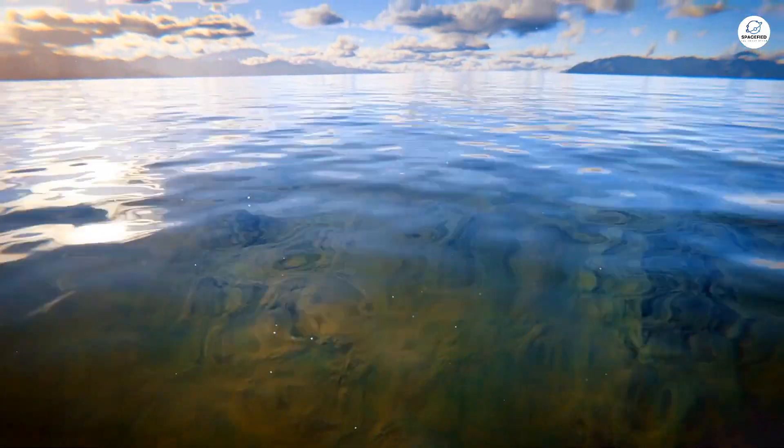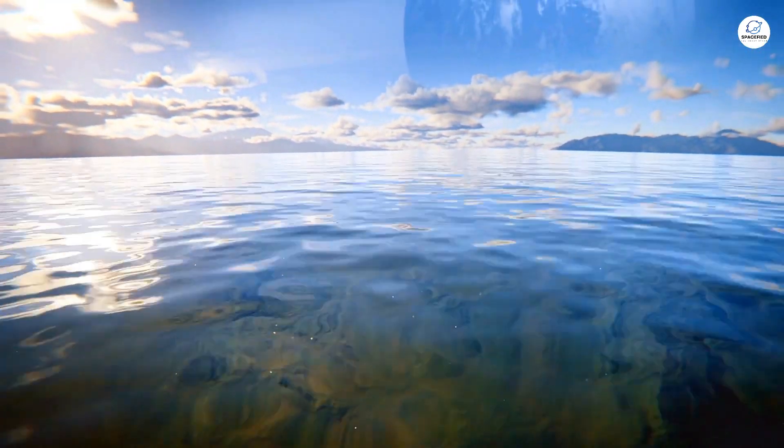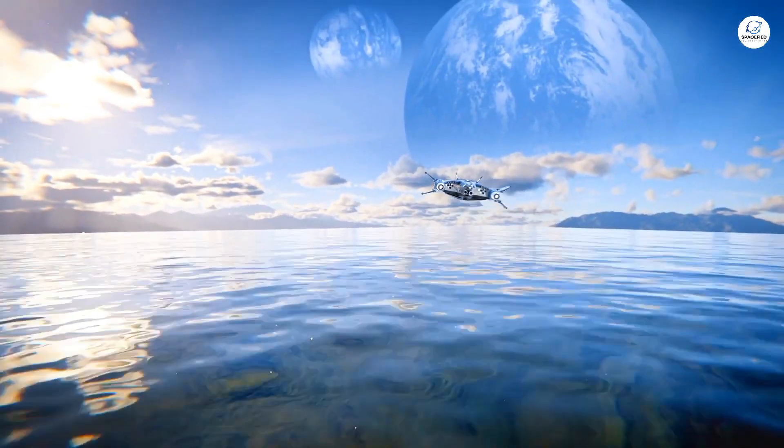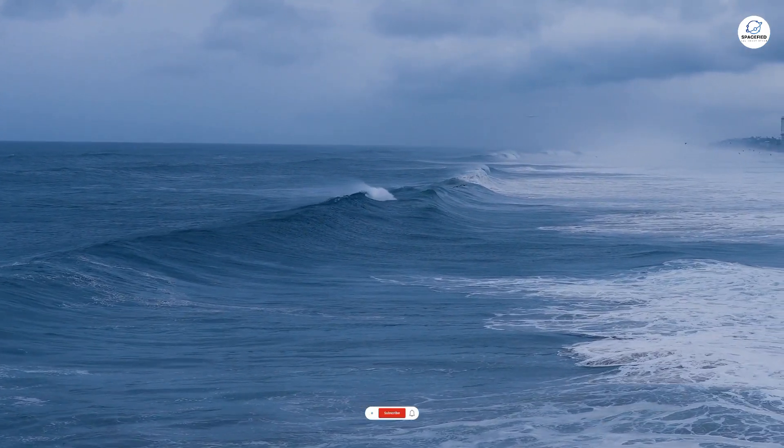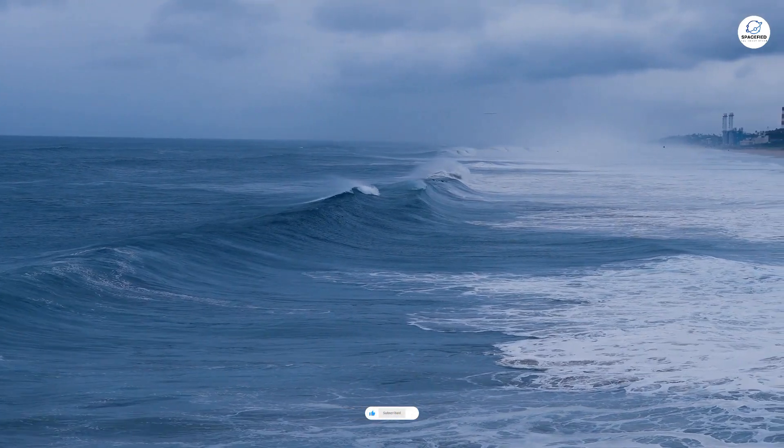Scientists believe GJ 1214b's oceans make up about 10 percent of its total mass compared to Earth's oceans, which account for just 0.02 percent. But here's the kicker.